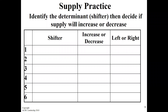RATNES for supply: Resources, Alternatives, Technology, Number of sellers, Expectations, Subsidies/Taxes. How come I know it and you know it? We really need to get those down.